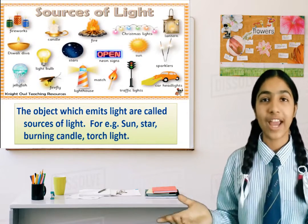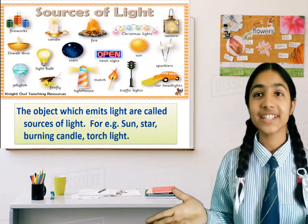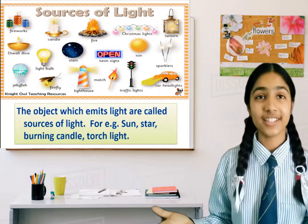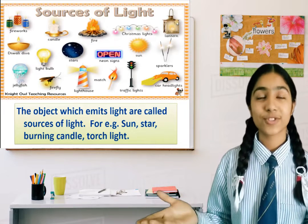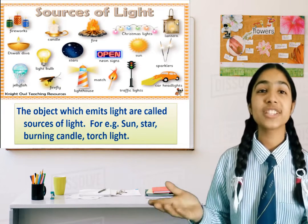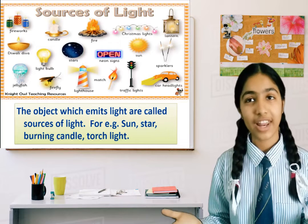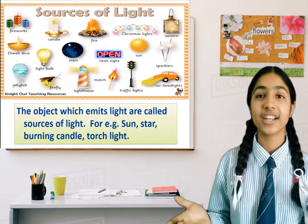There are many sources of light. For example, match, lighthouse, traffic lights, etc. Now what are sources of light? Objects which emit light are called sources of light. For example, sun, star, torch, light, etc.